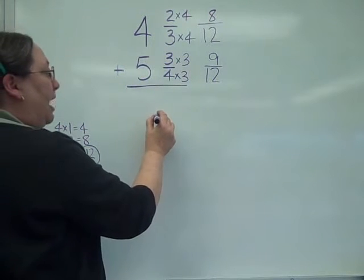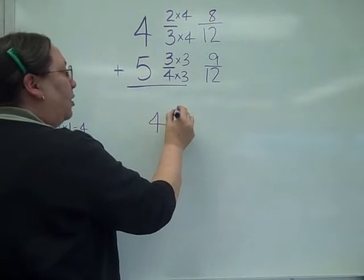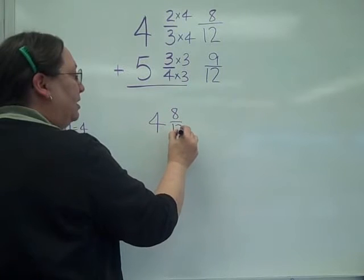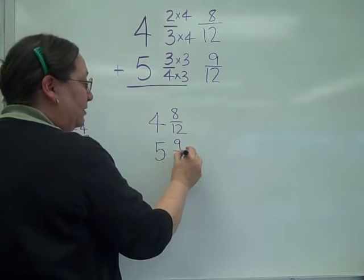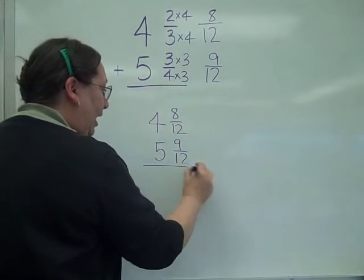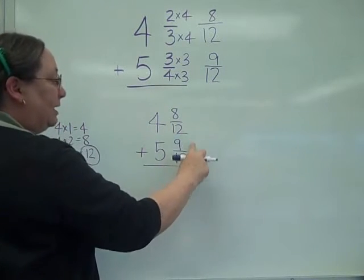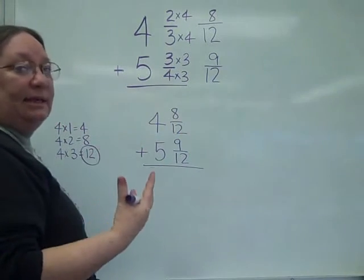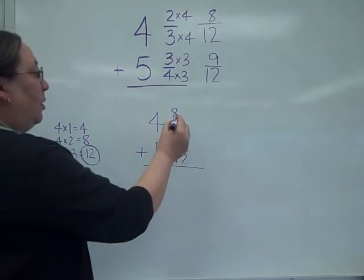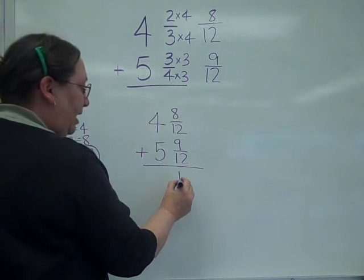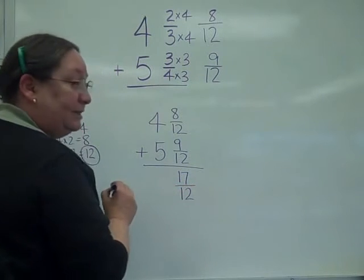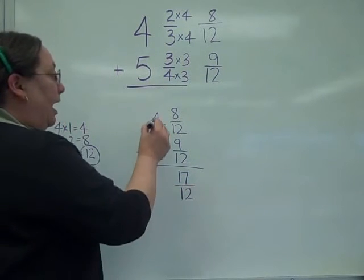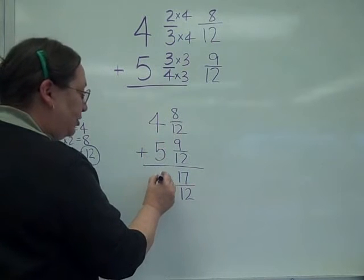Okay, so what my problem now has become is 4 and 8 twelfths plus 5 and 9 twelfths. And I can add now because I have the bottom numbers exactly the same. So 8 plus 9 is 17 over, the bottom number always is going to stay the same, and then 5 plus 4 is your 9.